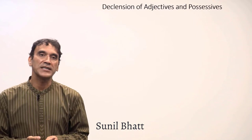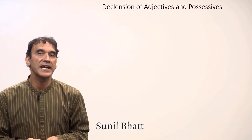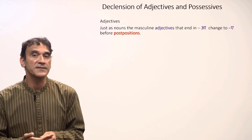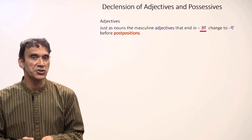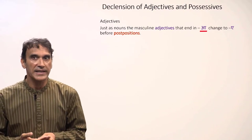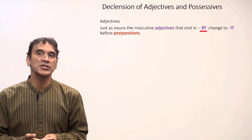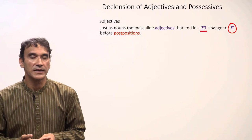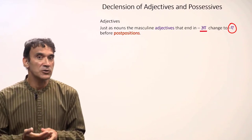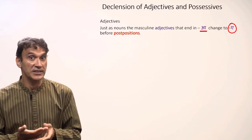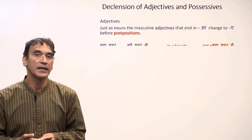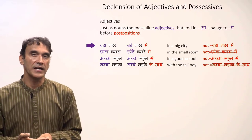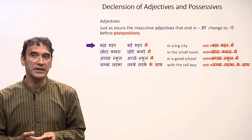The next grammar point is declension of adjectives and possessives. Just as with nouns, adjectives that end in 'ā' change with a postposition — the ending 'ā' changes to 'e' in the oblique case. Adjectives with other endings do not change; they stay the same. Let's take some examples: 'bada shahar' means 'a big city.'